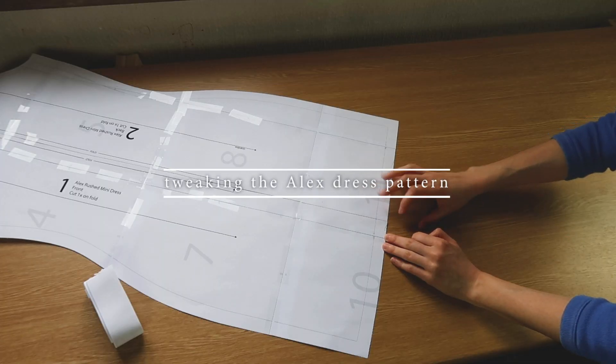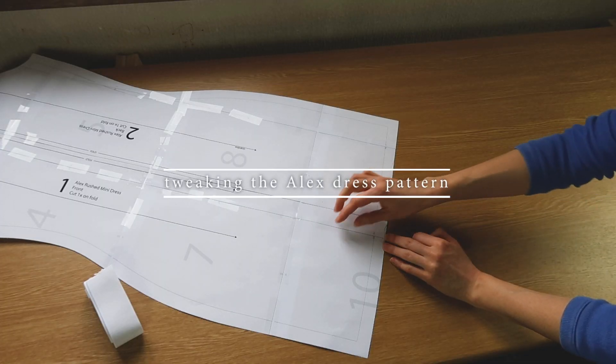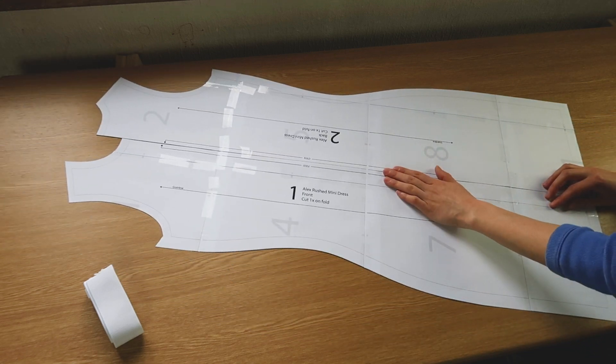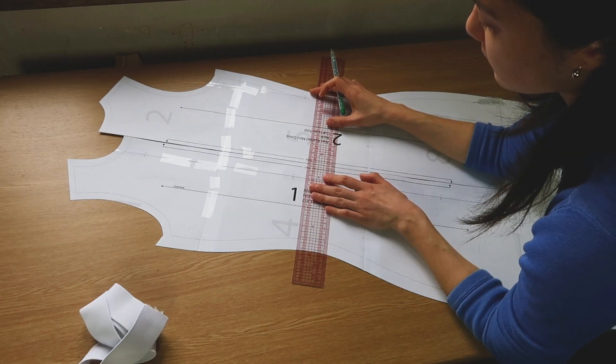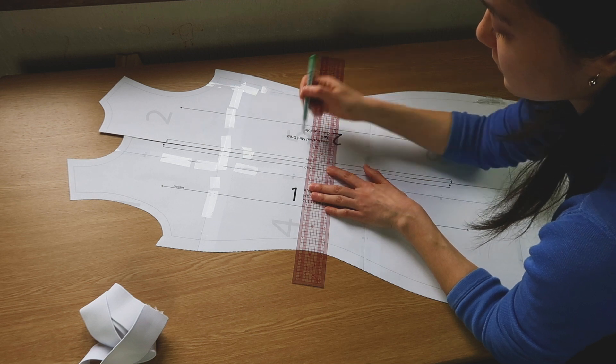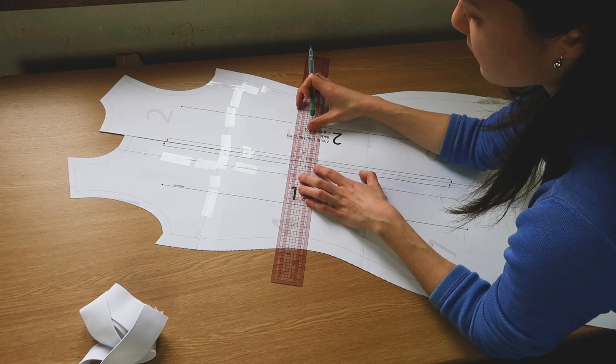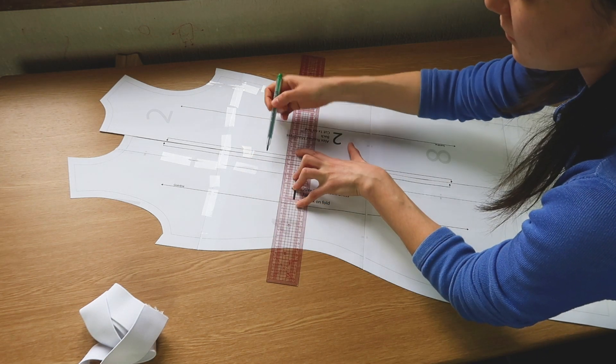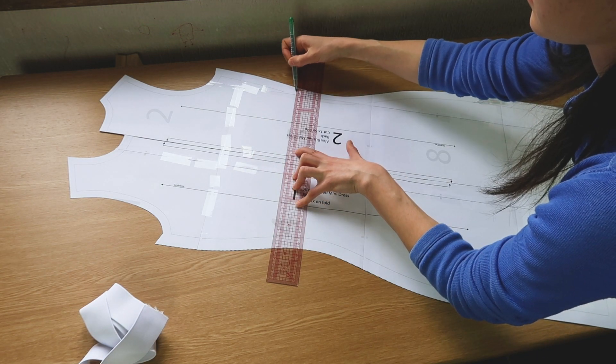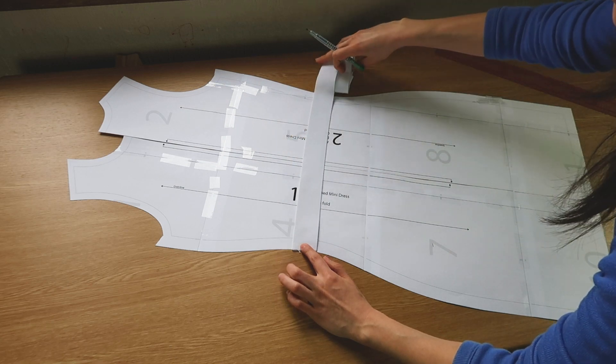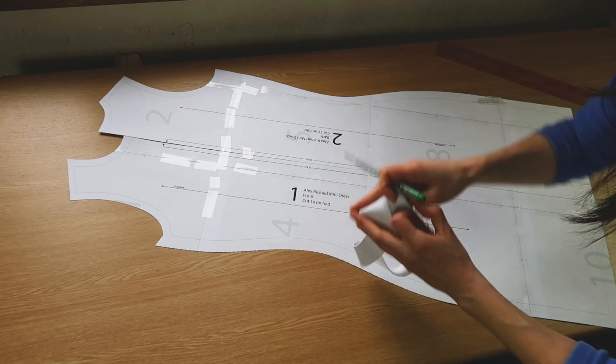So you've got the dress pattern before you, you're going to line the front and back parts together at the bottom and concentrate on the waistline. I'm going to estimate how high or low waisted I want the skirt to be, then I'll add four centimeters of seam allowance to my waistline. These extra four centimeters are going to be used to cover an elastic band, which I chose to be four centimeters wide.